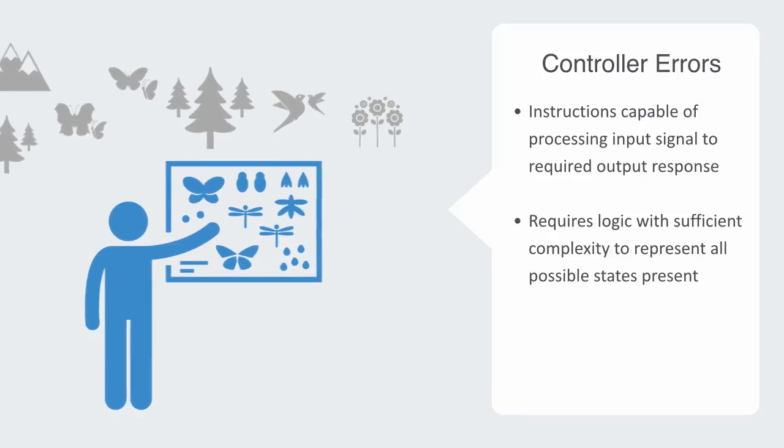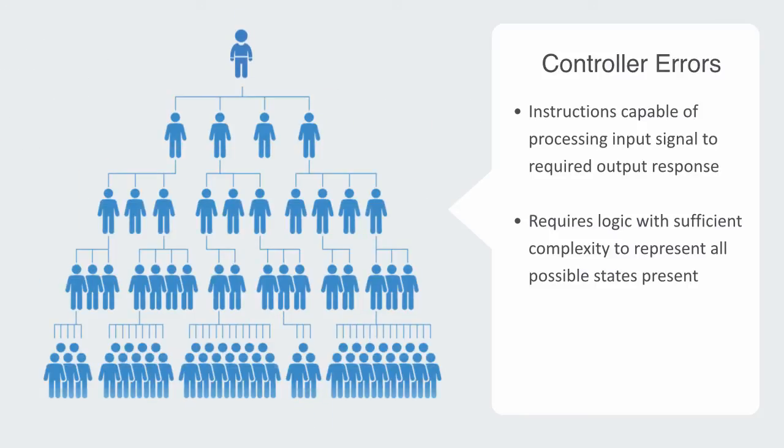As an example of this, we might think of asking a small child to run a multinational corporation. The child simply does not have the conceptual capabilities to represent the complexity of the system it is asked to regulate. Thus, it is not in control and the system's functionality will be degraded over time as it moves outside of some homeostatic parameter that the child is not aware of, and thus, not able to respond to.